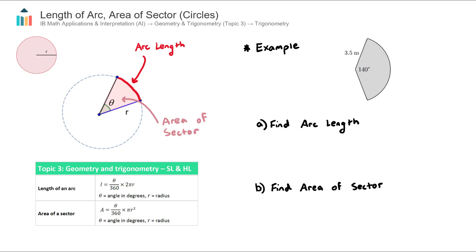In the AI formula booklet we are given formulas for both the length of an arc and the area of a sector, so this is actually a pretty easy subtopic if you become comfortable with how to use these two formulas. Let's go through both with an example.